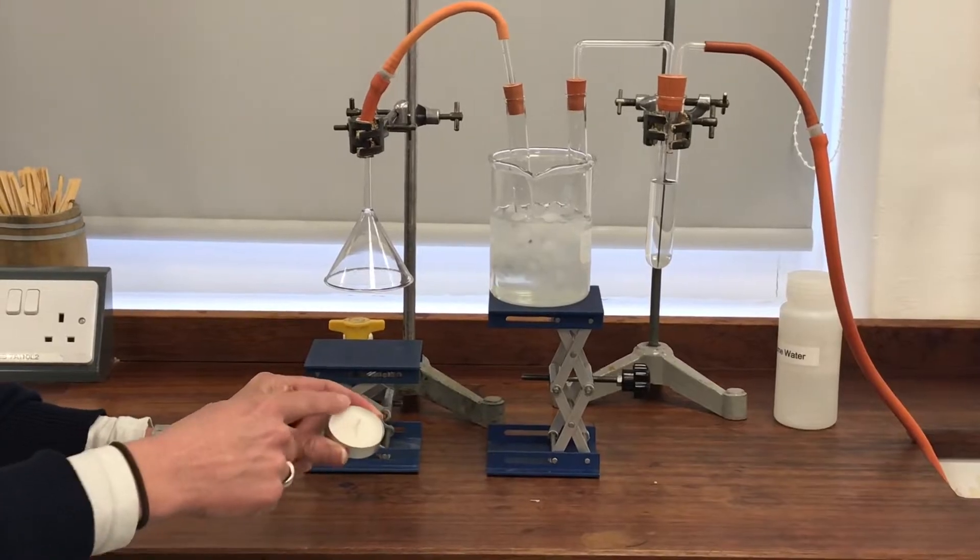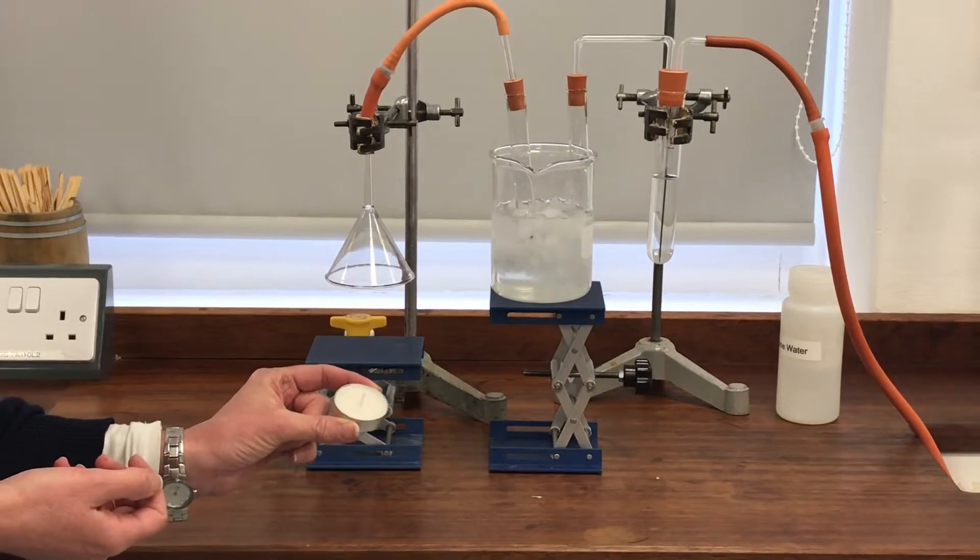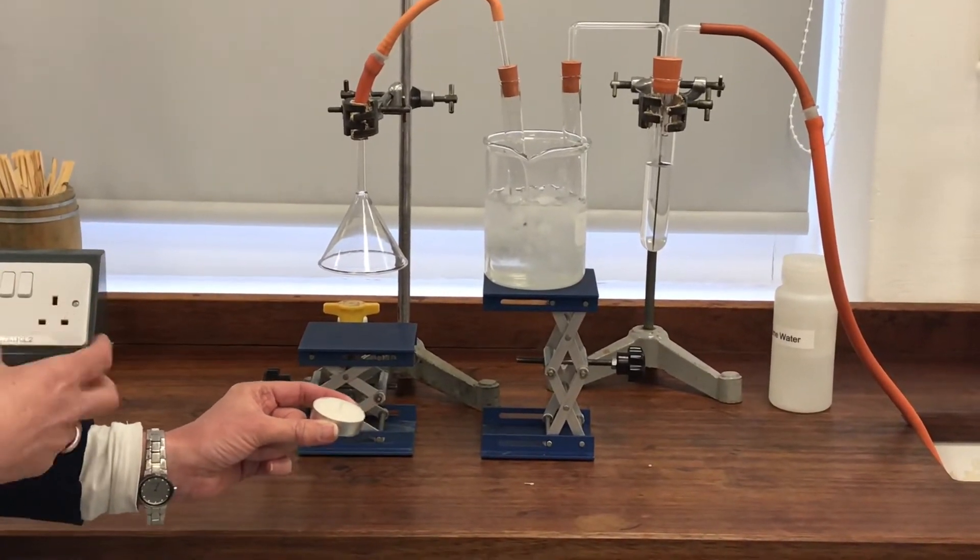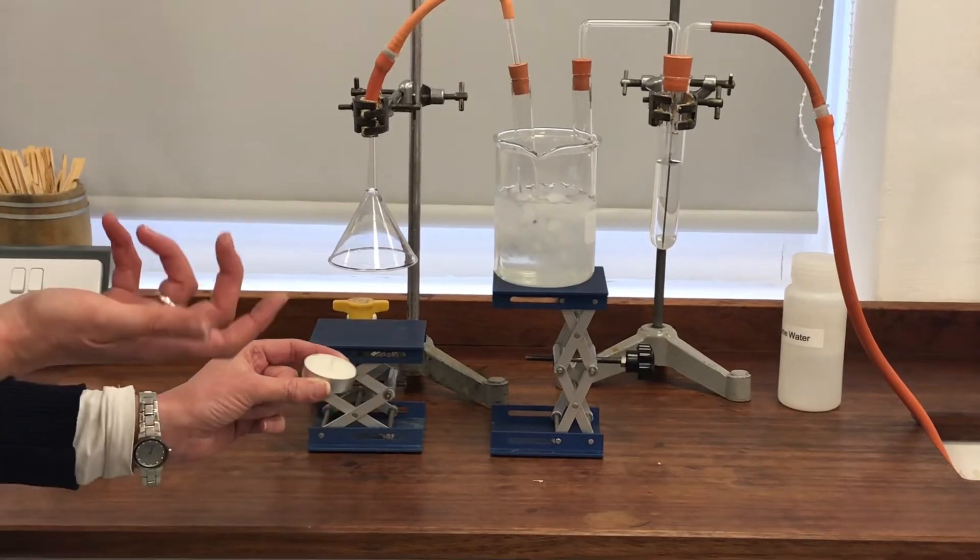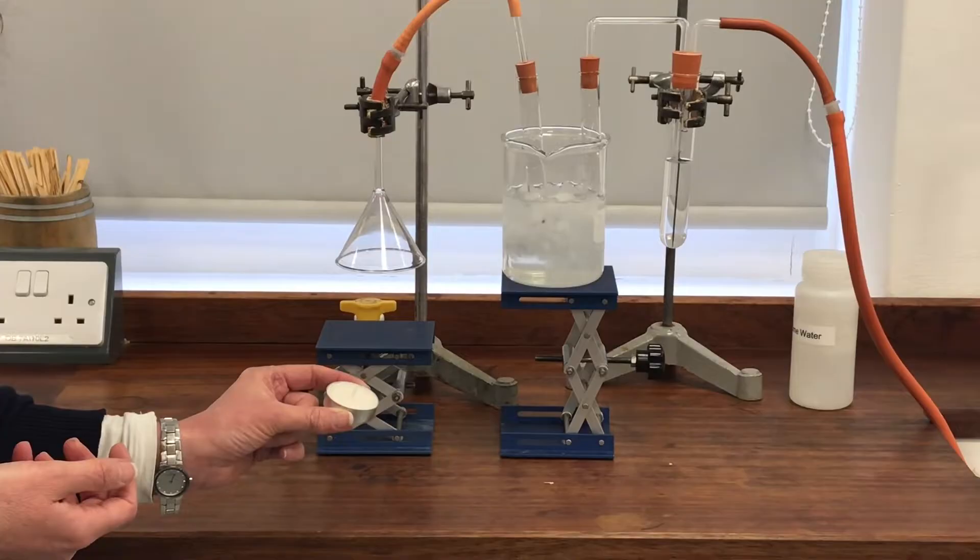So the candle wax is what we're interested in and that's a hydrocarbon. It's effectively a really long alkane. If it's a hydrocarbon, that means it's made of hydrogen and carbon. So we might like to make a guess about what products we think we're going to get from it when we burn it.